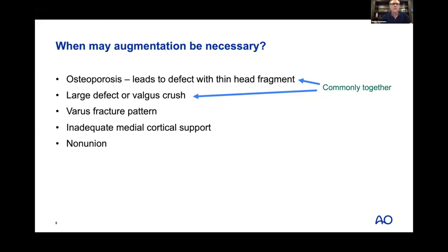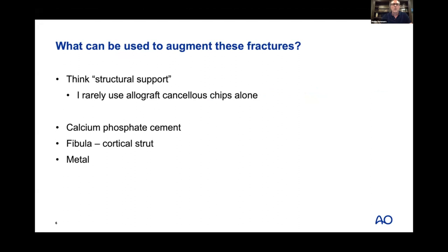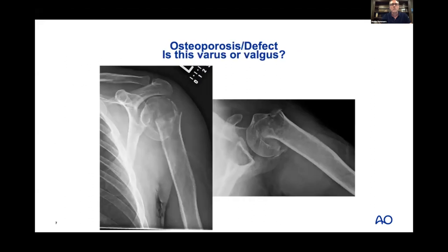What can you use for augmentation? I think about structural support. I rarely use cancellous allograft chips by themselves — in older people you could just keep packing that in and they don't have good bone to pack against. A calcium phosphate cement bone void filler can work well, a fibular cortical strut, or in some cases metal.